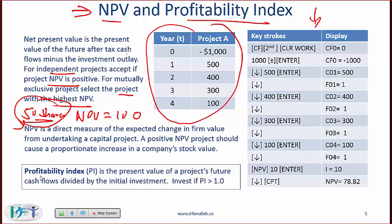Related to NPV is the profitability index, which is the present value of a project's future cash flows divided by the initial investment. If the profitability index is greater than 1, you should go for the project. Having a positive NPV is equivalent to saying the profitability index is greater than 1.